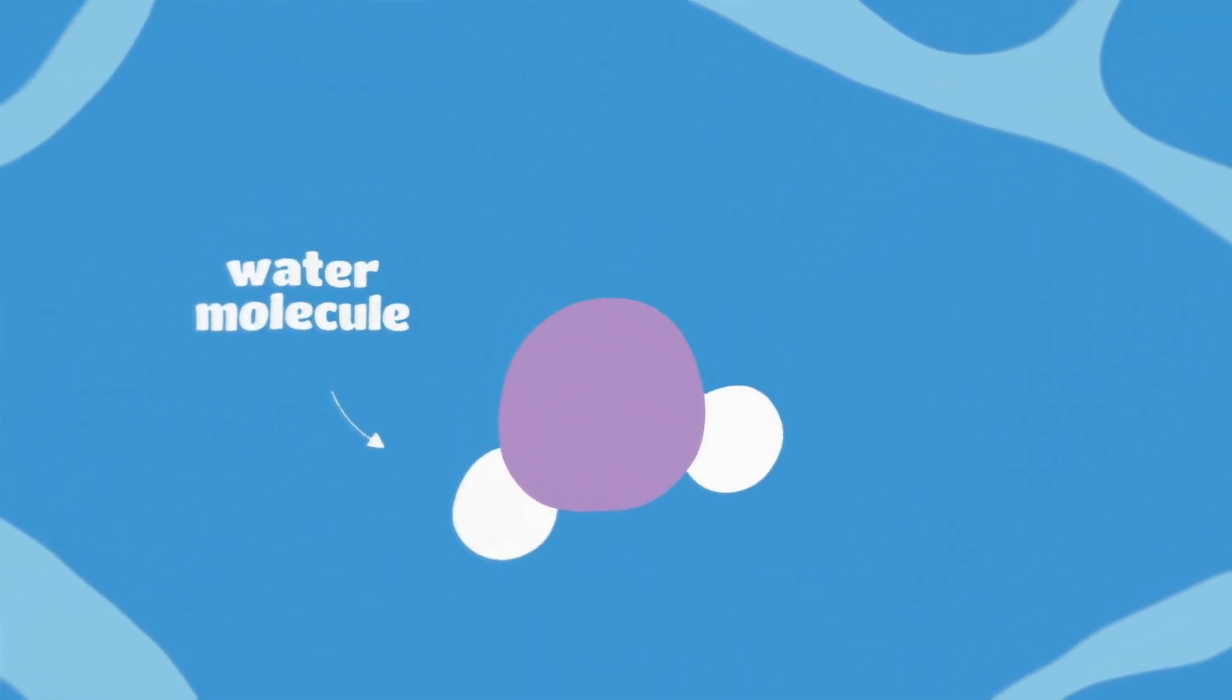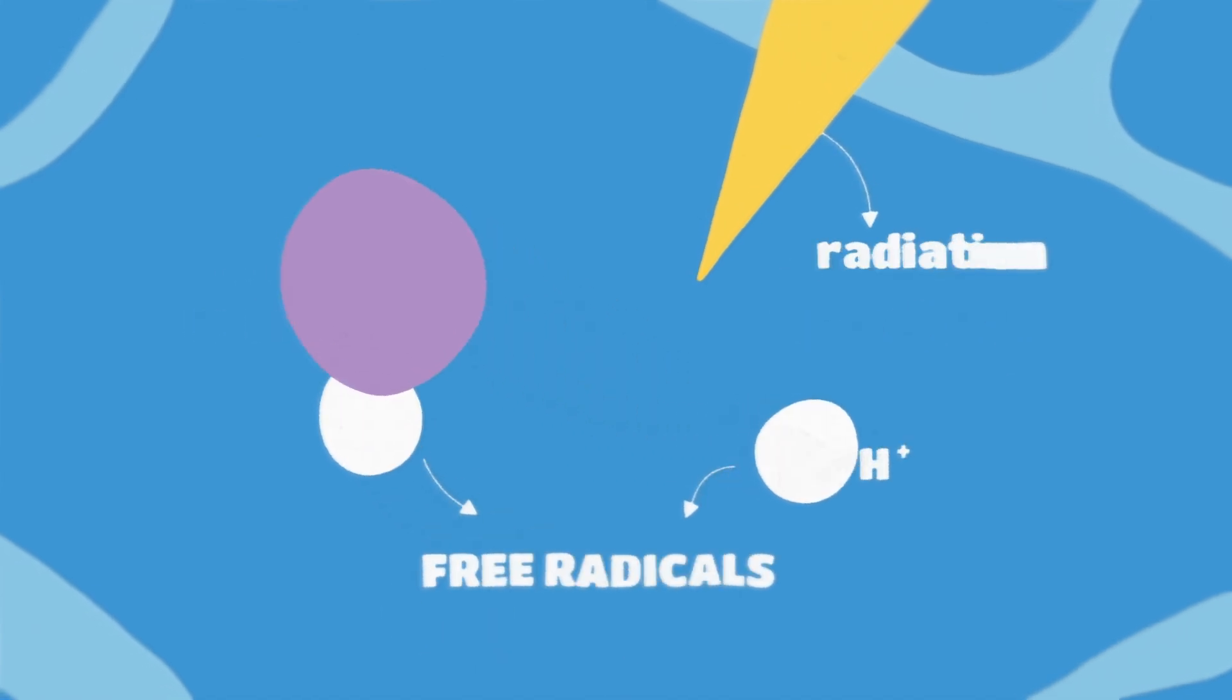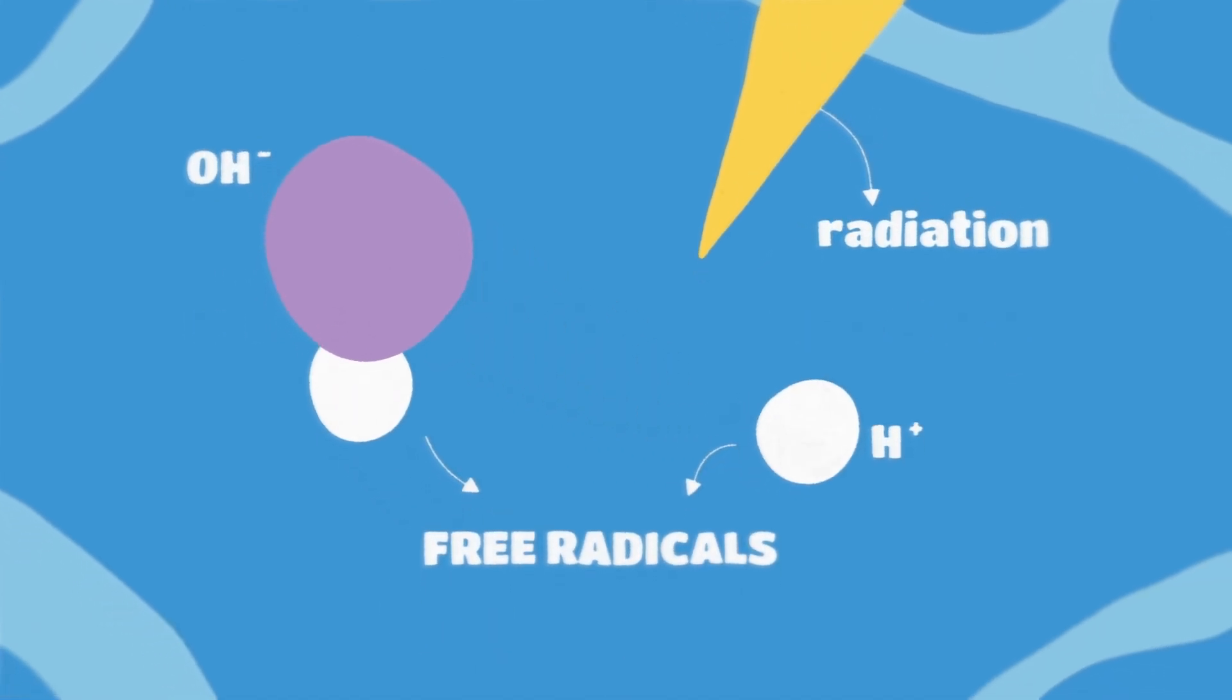Over time, this process cascades into destroying the whole tumor. Indirectly, the rays also damage the area immediately surrounding the DNA, creating unstable particles called free radicals.